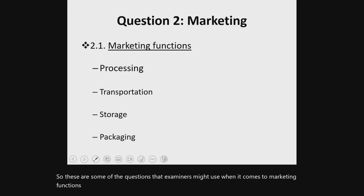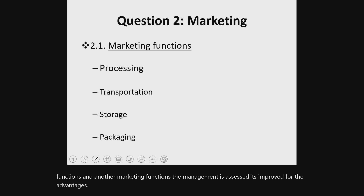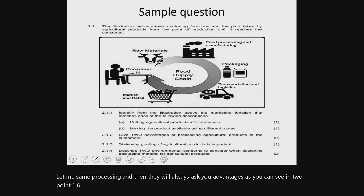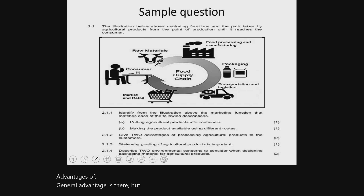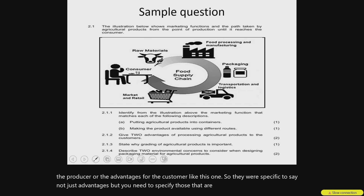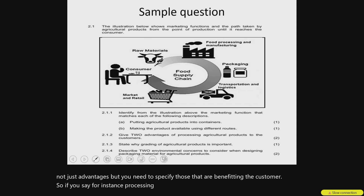Another way marketing functions are assessed is to look for the advantages. They will say 'processing' and then always ask you advantages — as in 2.1.2, give two advantages of processing. Sometimes the examiner will be tricky: they will say advantages for the producer or the advantages for the customer, like this one, which was specific to advantages benefiting the customer. So if you say processing creates jobs, that doesn't benefit the consumer. The learner must always be careful when reading these questions.